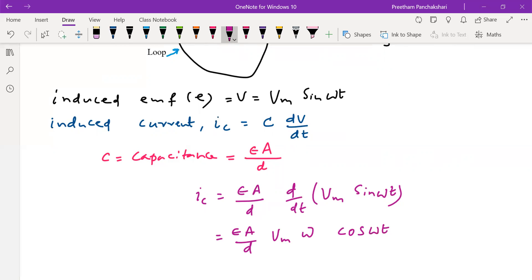So this is the conduction current which is measurable flowing in this circuit containing the capacitor. We should take this as equation number one.